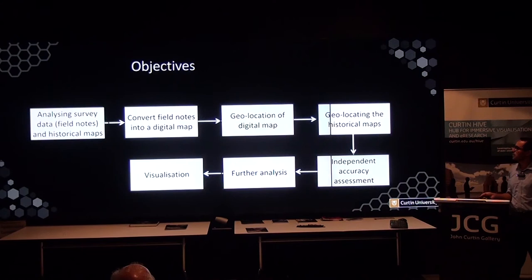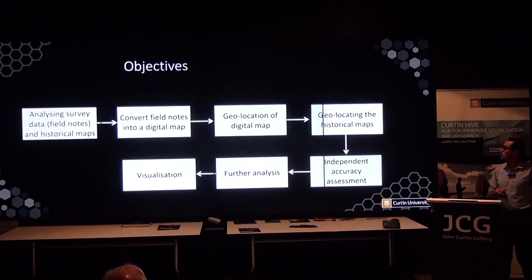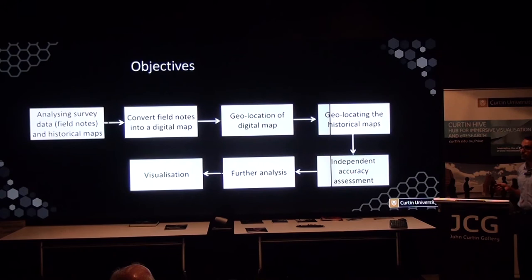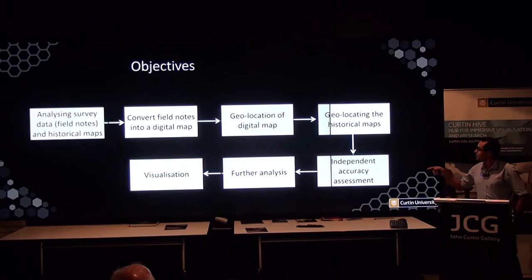The objectives are: first, analyzing the field notes which include survey data and historical maps; then converting the field notes into a digital map in a local coordinate system. This allows for geolocation — the next step is geolocation of the digital map from the local system to the actual system. After that, geolocation of the historical map based on geolocating the survey data first, followed by independent accuracy assessment, further analysis, and visualization.